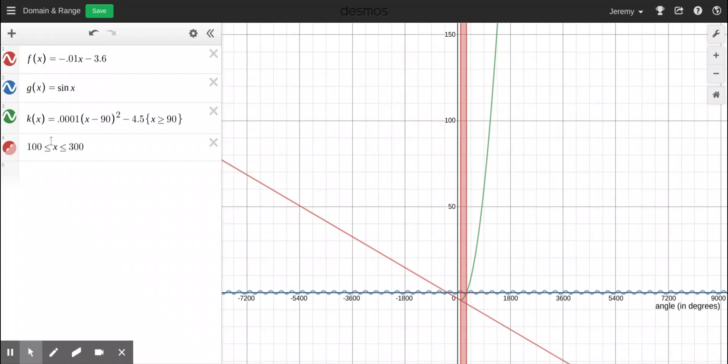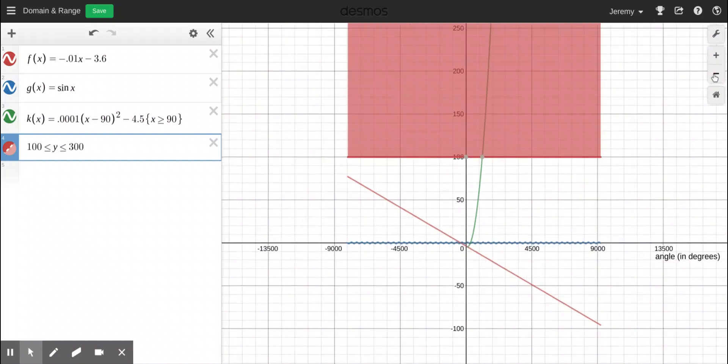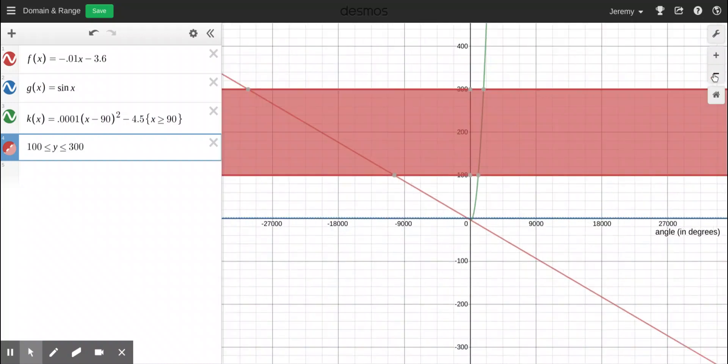If I change this to a y, look what just happened. It's doing all the y values between a y of 100 and a y of 300. So instead of doing x values, it's now doing y values.